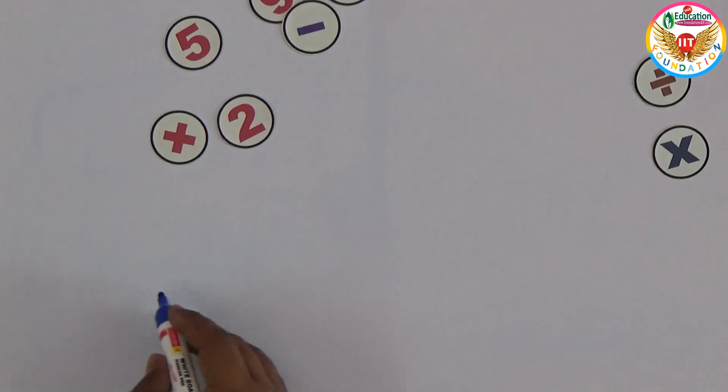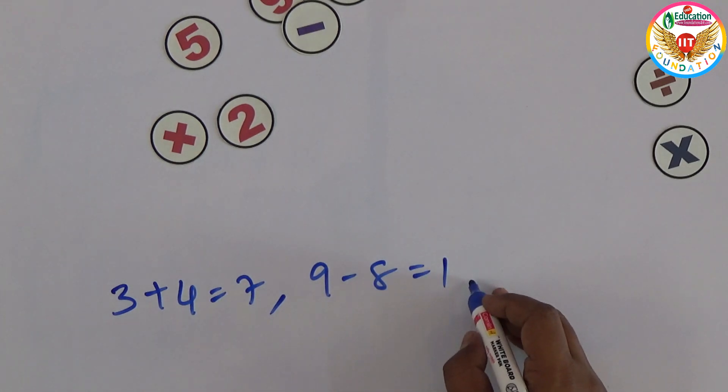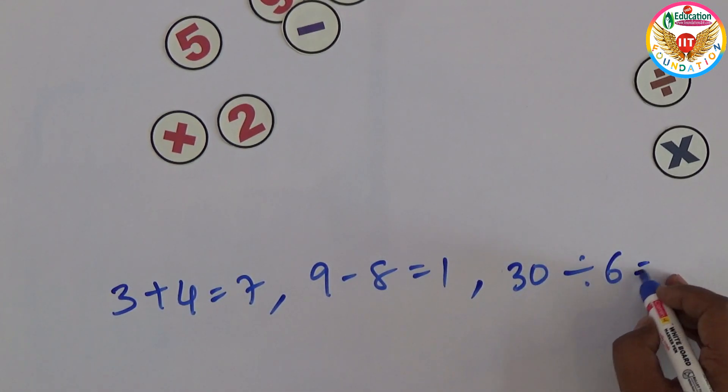Let me see one example. For example, 3 plus 4 equals 7, 9 minus 8 equals 1, and 30 divided by 6 equals 5.